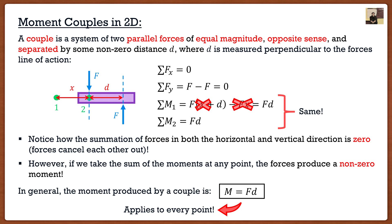However, these two forces create a moment about any point, which produces a non-zero rotation. Even though these forces are not moving our object side to side or up and down, it is rotating our object. This allows us to create a nice formula for moment couples in two dimensions, where the moment couple equals the force times the perpendicular distance between them. What's nice about this is it applies to every point in our system — these two forces created the same moment whether taking it about point one or point two. And it's only one calculation.